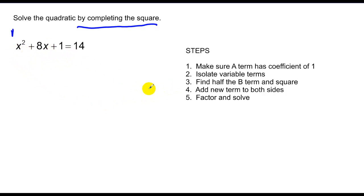I want to isolate my variable terms in step 2. So I'm going to take and add a negative 1 to the other side. So I have x squared plus 8x equals 13. Then I want to find half the b term and square it. So I take half of 8, which is the b term, and square that value. So that's basically 4 squared, which is 16.